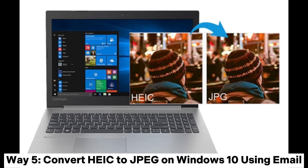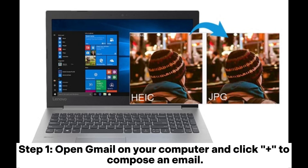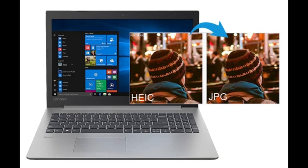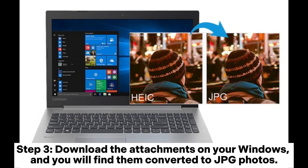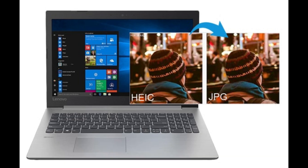Way 5: Convert HEIC to JPG on Windows 10 using Email. Step 1: Open Gmail on your computer and click the plus button to compose an email. Step 2: Click the Attach Files icon and then upload your HEIC files. Step 3: Download the attachments on your Windows, and you will find them converted to JPG photos.